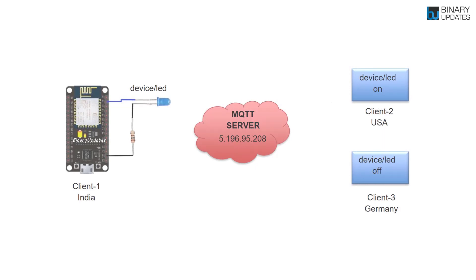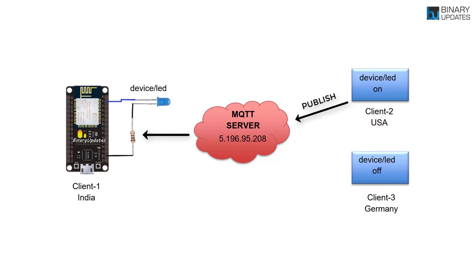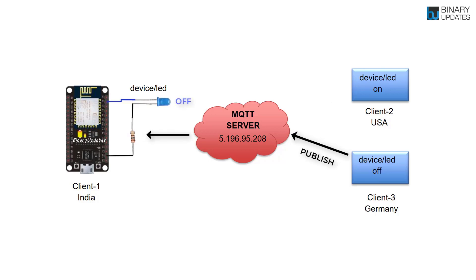When it comes to controlling devices, say we have an LED connected to a NodeMCU ESP8266, and we assign the topic name 'device/LED' to that LED. When any client — either Client2 or Client3 — publishes the message 'on' on topic 'device/LED', then the LED will turn on. And when any client publishes the message 'off' on topic 'device/LED', the LED will turn off. This is how MQTT uses publish and subscribe mechanism in IoT to control and monitor devices remotely from anywhere in the world.